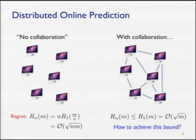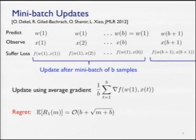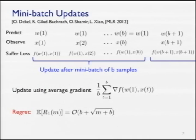One approach to achieving this was proposed by Dekel et al. at Microsoft. Rather than updating after every single observation, they group observations into a mini-batch of size B. We use the same predictor for those first B observations, aggregate gradients — since these gradients are random, averaging them reduces variance and gives a more confident update direction. But we accumulate loss over the entire mini-batch.